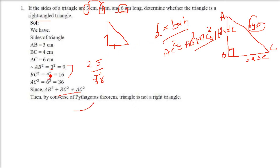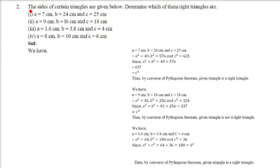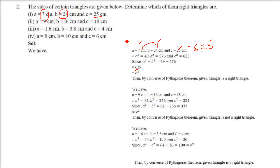This is a converse proving of Pythagoras theorem. Again, with sides 7, 24, 25: 7 square is 49, and 24 square is 576. Adding them we get 625, and 25 square is also 625. Since 625 equals 625, this triangle with these sides is a right angled triangle, by the converse of Pythagoras theorem.